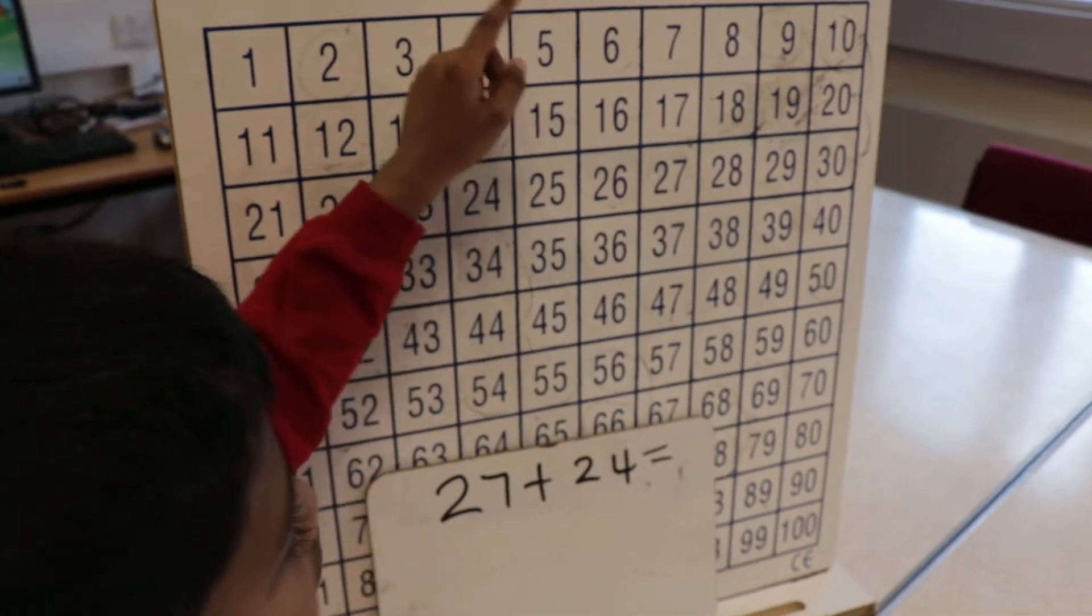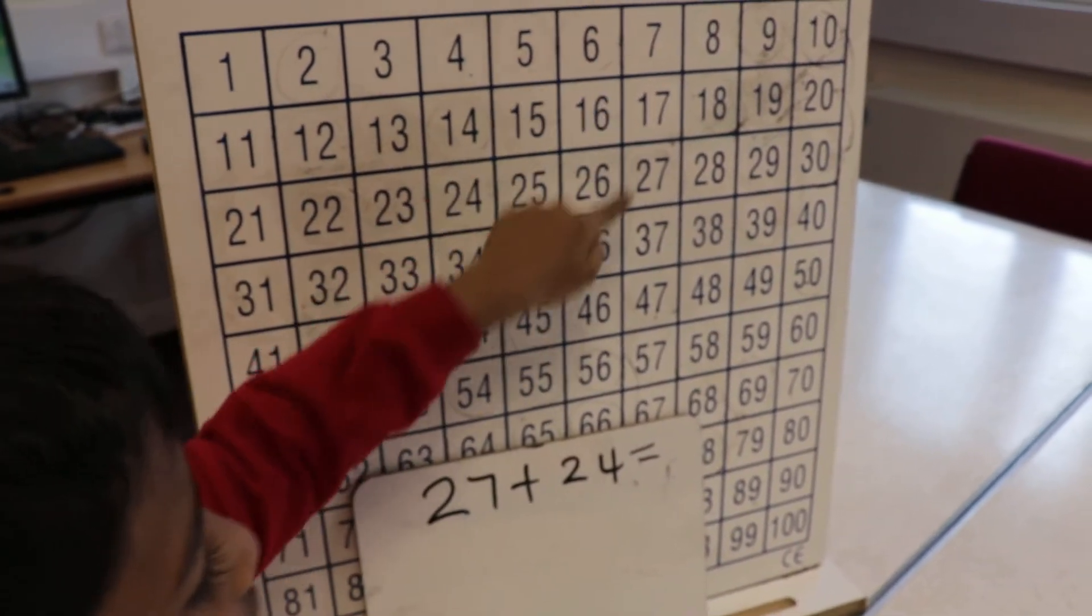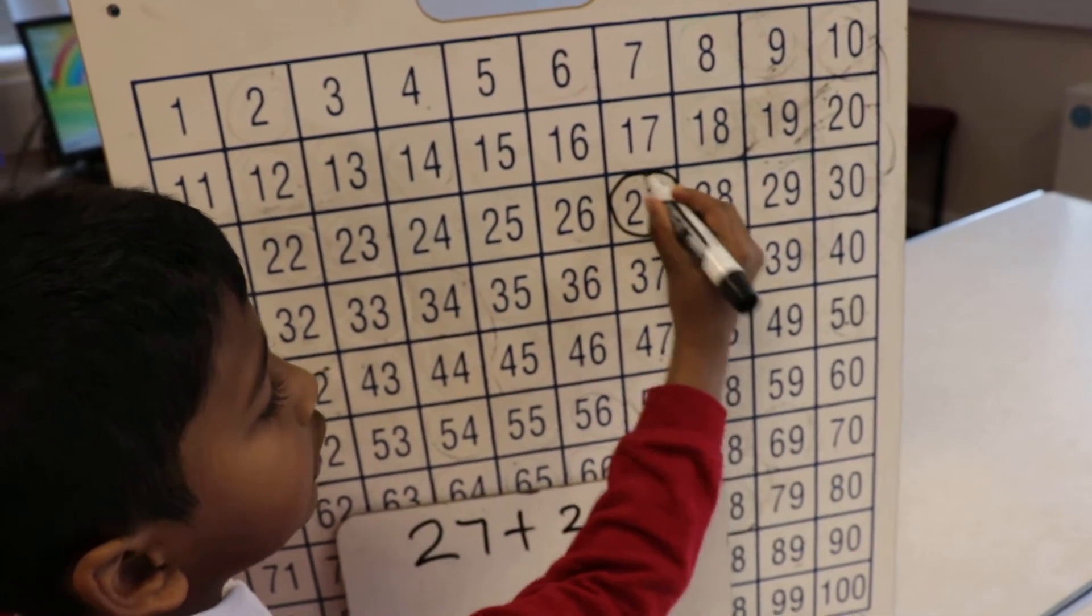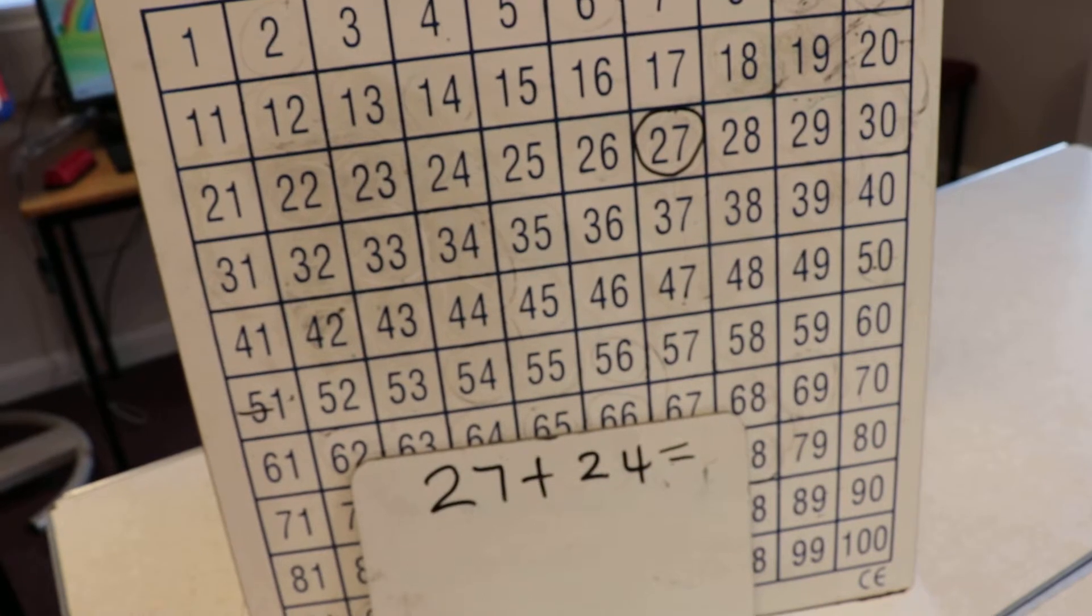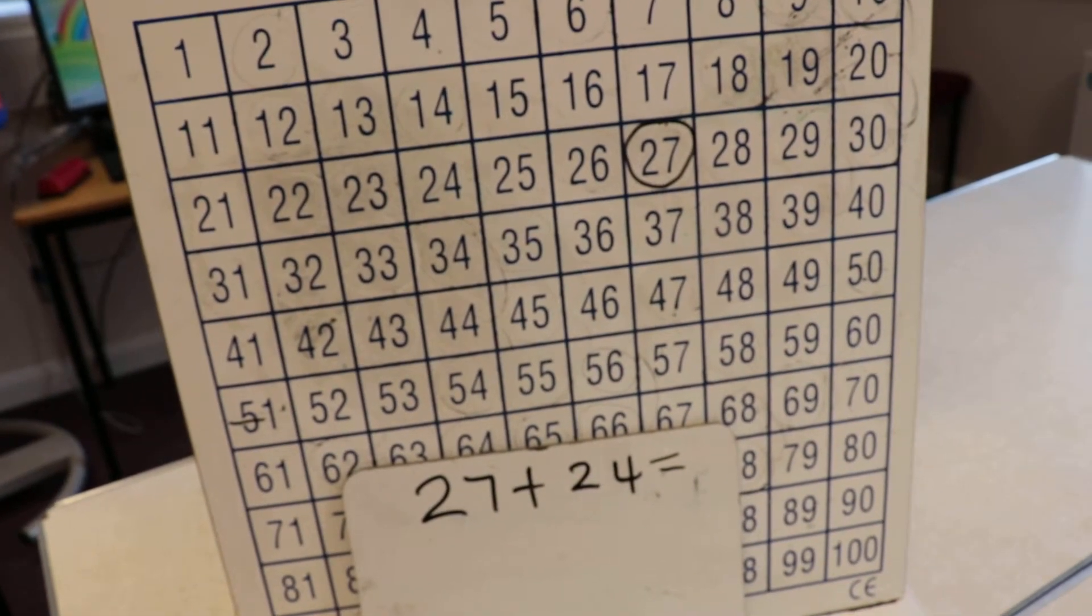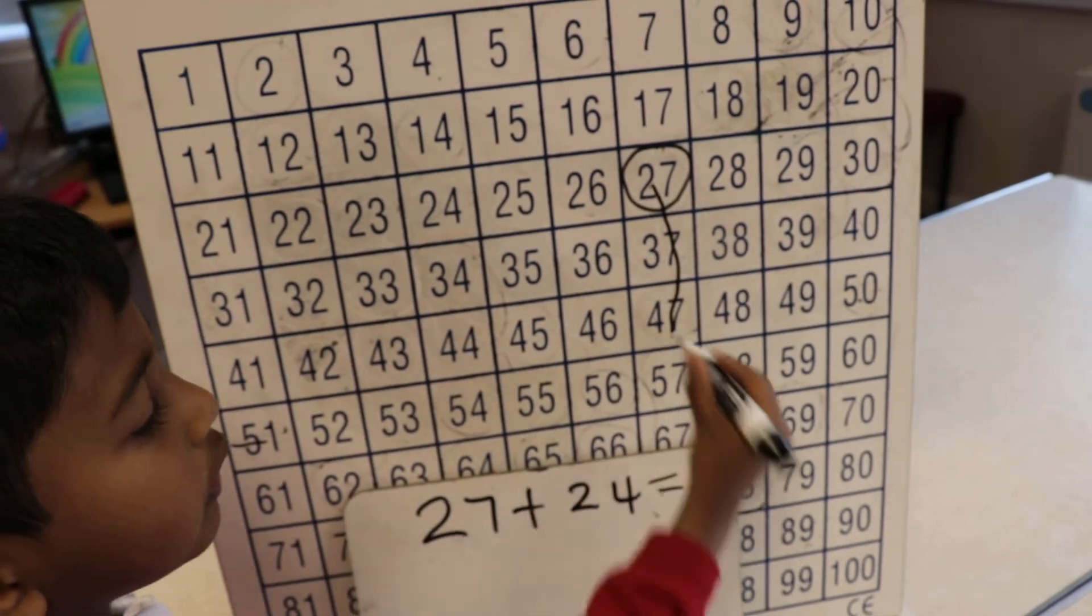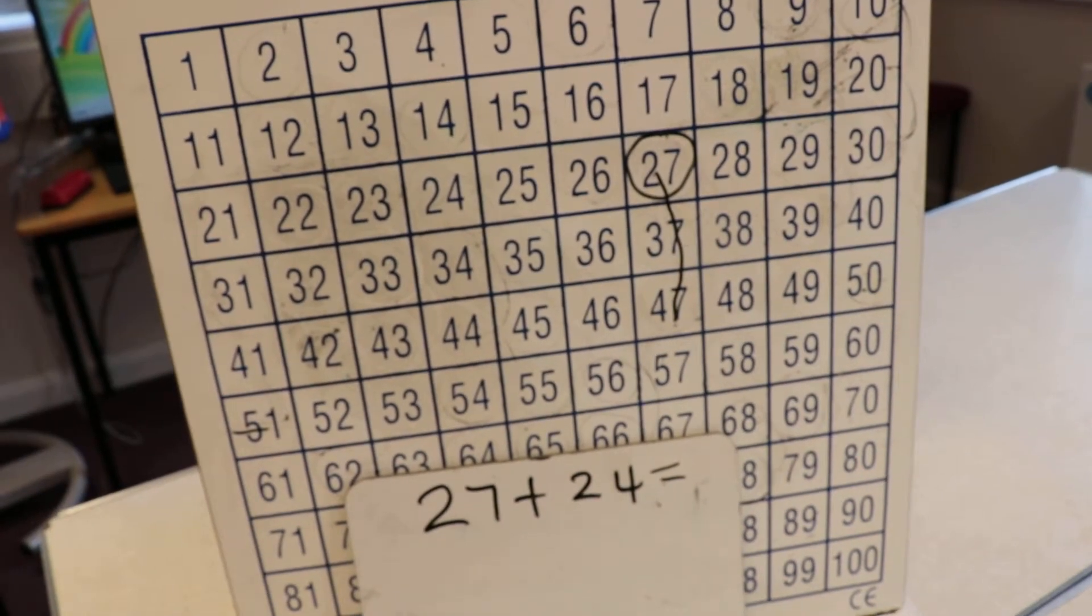First, I know that 27 will be in the seventh column, so I'll circle 27. Then, I know I'll be adding 20 to 27, so I'm going to go two squares down, and I'll reach 47.